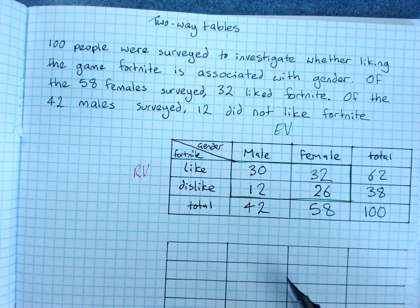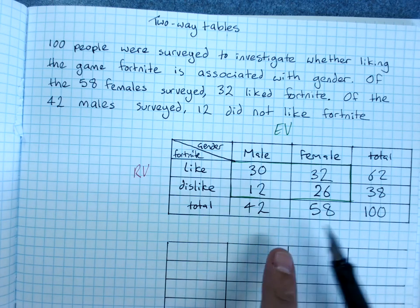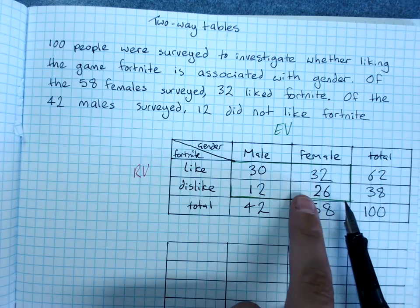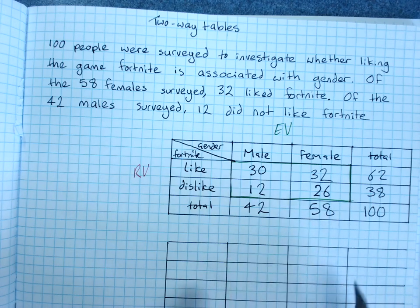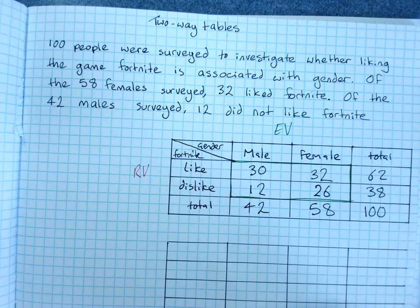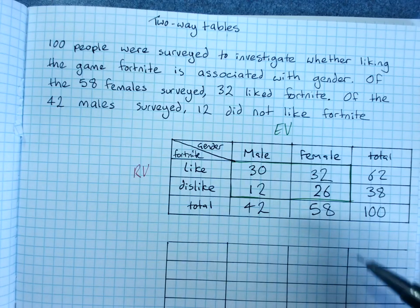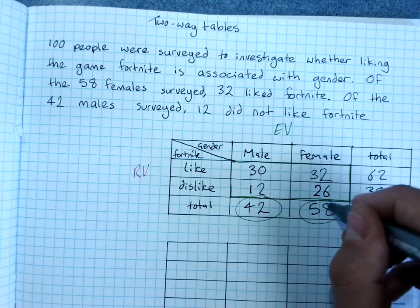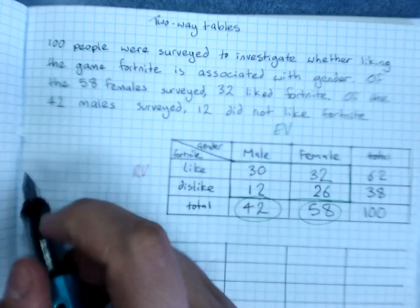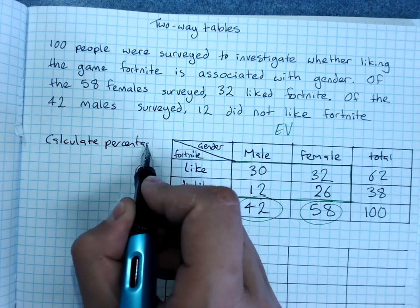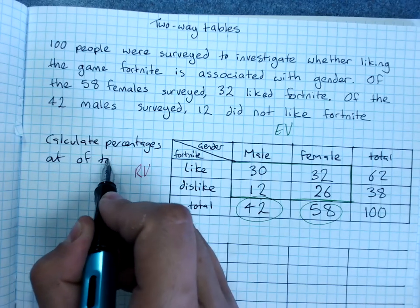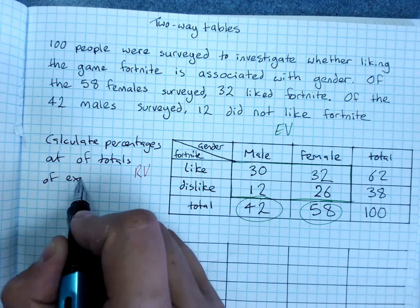Now it doesn't really help us much because while we can say that more females liked Fortnite than males, we asked a lot more females. So we really want to be looking at percentages. So you're likely to be reading or creating a percentage-based two-way table. The percentages come from the totals of the explanatory variables. So I'm going to say calculate percentages out of totals of explanatory variables.